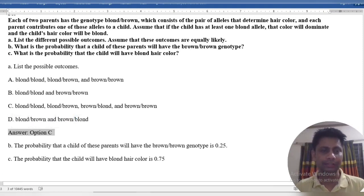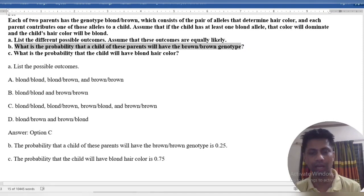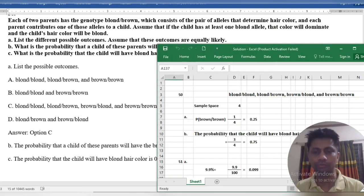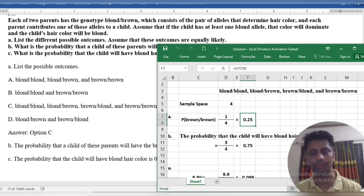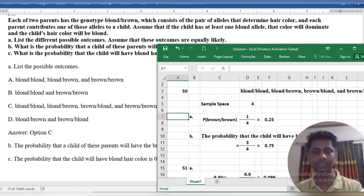The question is: what's the probability that a child of these parents will have the brown-brown genotype? We know the sample space is four, so the probability of brown-brown is 1 divided by 4, which equals 0.25. This is the answer.